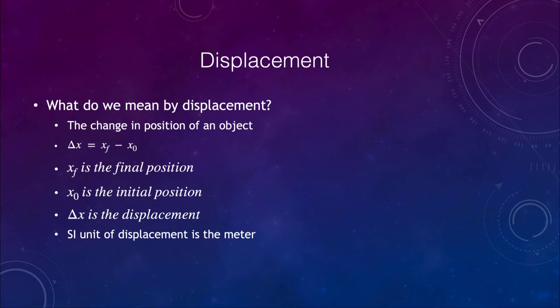So let's go ahead and get started. The first thing we want to talk about is displacement. Now what do we mean by displacement? Well, the definition of a displacement is the change in the position of an object. And that is its net change, so not overall motion, but its change between two points.